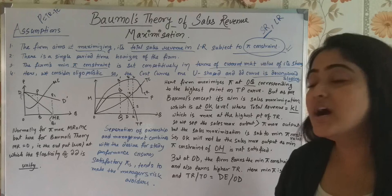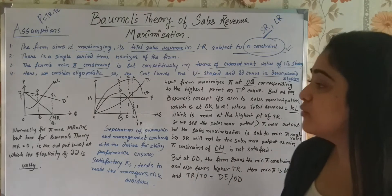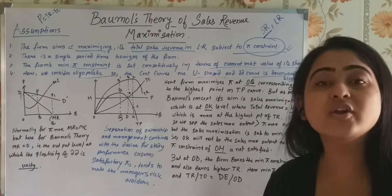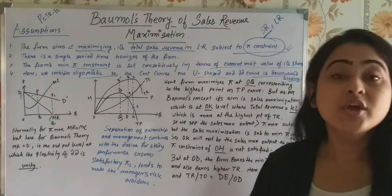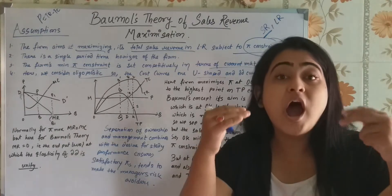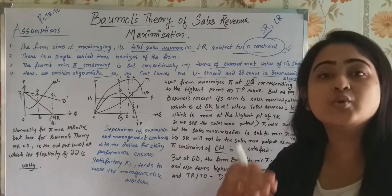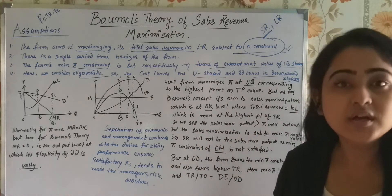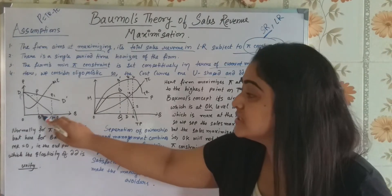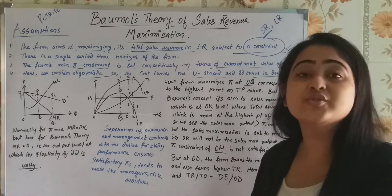But what about the sales maximization output? If you go in terms of sales maximization output, then the output should be Q1 where MR is 0, marginal revenue is 0. Why marginal revenue is 0? Try and understand. Because after this, if we are increasing, then total revenue will start falling down. That implies that we are in the saturation point. Marginal revenue is equal to 0 means we are in the saturation point.